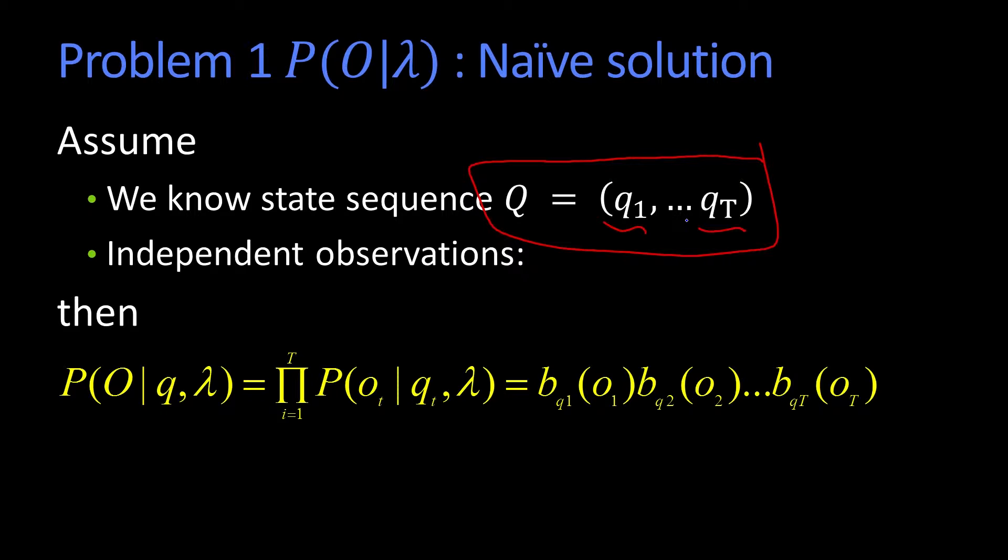And the other thing we're going to assume is that the observations only depend upon the state that you're in. So when we say independent observations, what we mean is that if you knew the state, then the probability of the observation is just dependent on the state and not dependent upon anything else. Well, if that's the case, then the probability of the particular observation sequence given the state sequence, because of independence, it's just the probability multiplied times each other of the output of the particular symbol seen at time t given that you're in the particular state at time t, taking the whole product. And that's just these b variables.